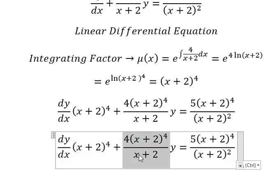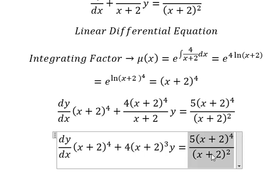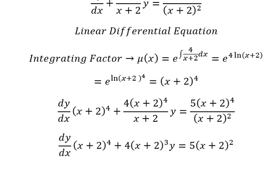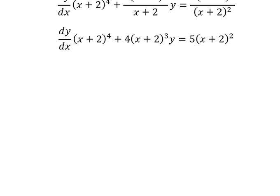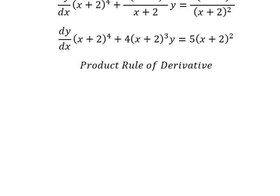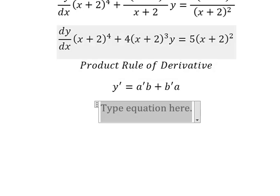Now we multiply both sides by this integrating factor. We can simplify, and next we use the product rule of derivatives: the first derivative of (y · (s+2)^4) equals the first derivative of a multiplied by b, plus the first derivative of b multiplied by a. So we put the integration on both sides.